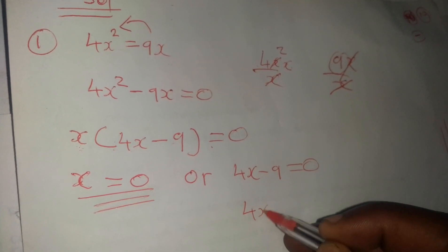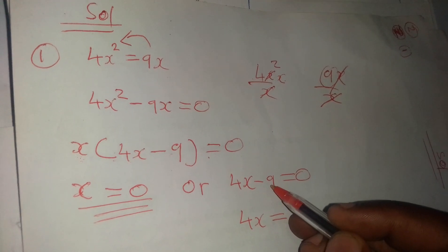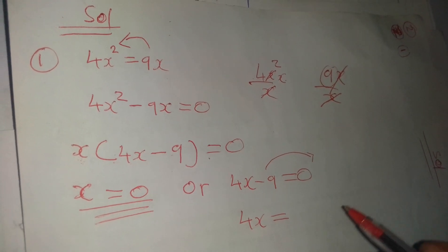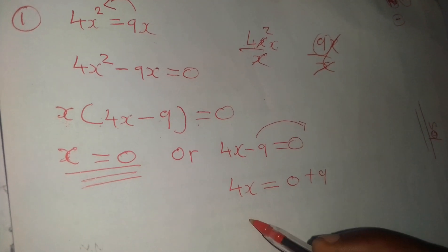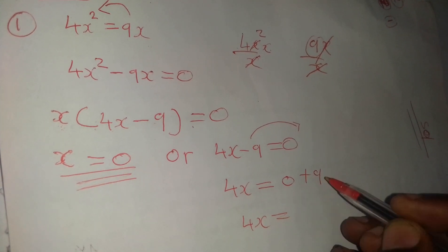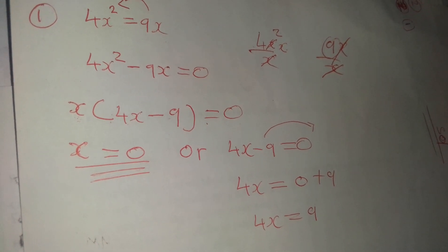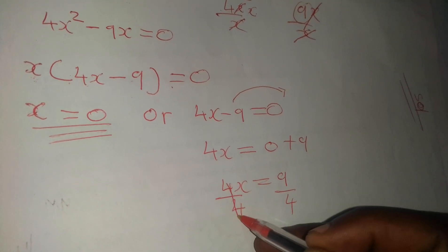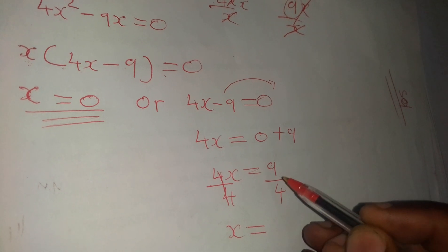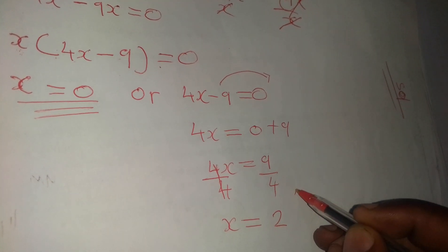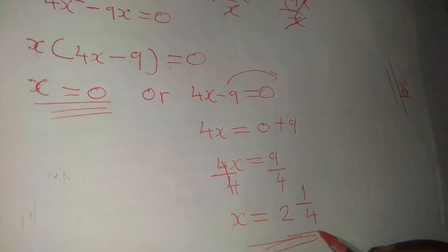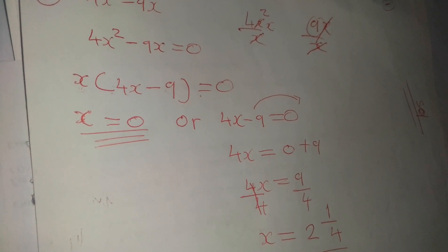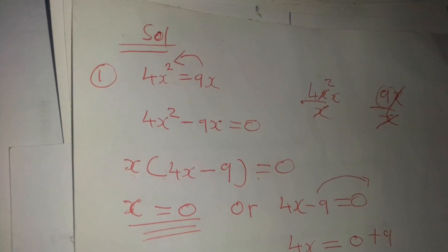From there we have 4x minus 9 equals 0. This negative 9 will transpose to the other side, becoming positive 9. So 4x equals 9. To find the value of X we divide both sides by 4. The 4s cancel, giving x equals 9 over 4, which is 2 and one quarter. So our values of x are x equals 0 or x equals 2 and one quarter.